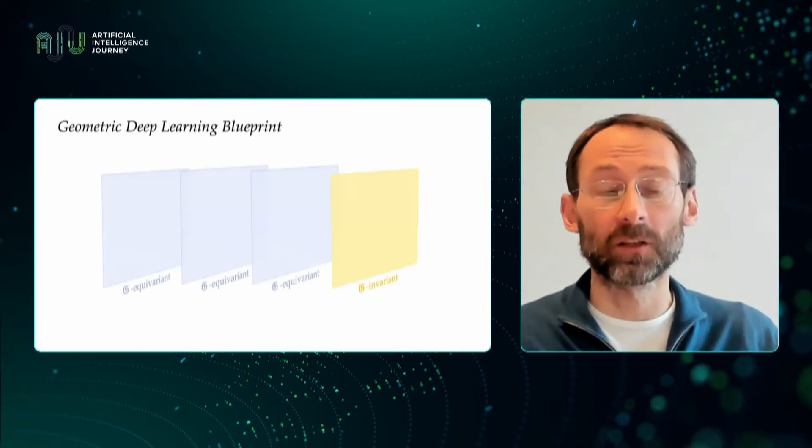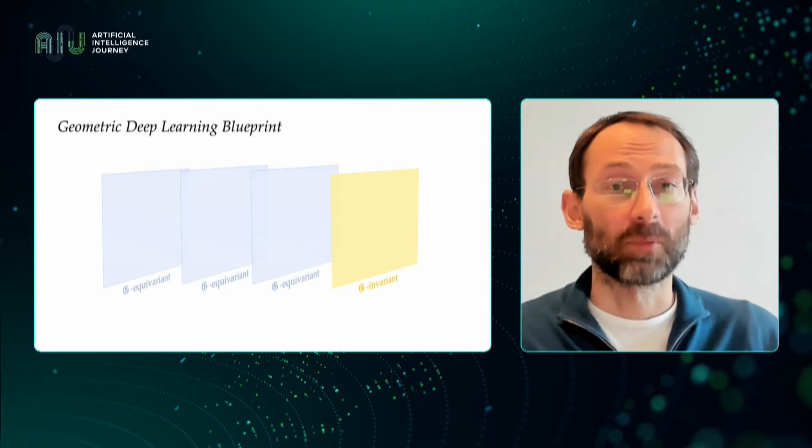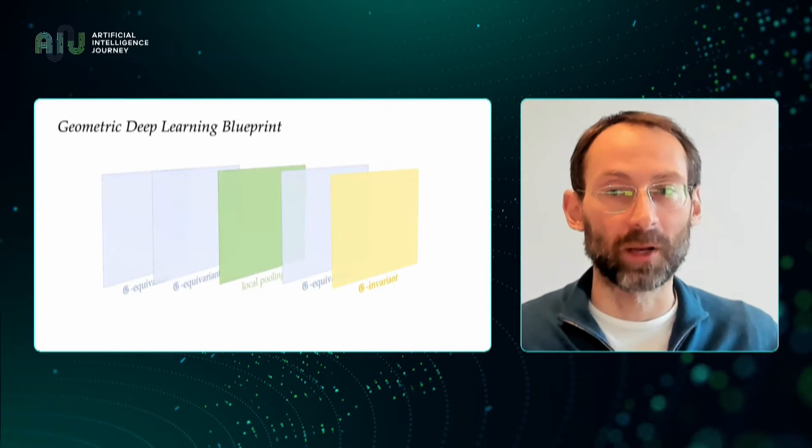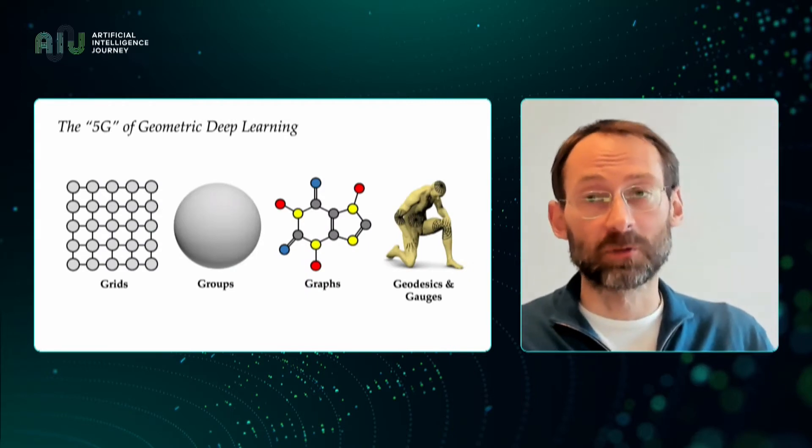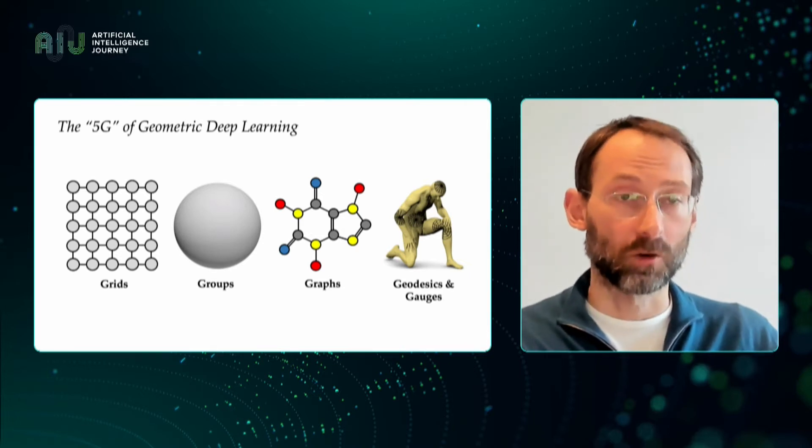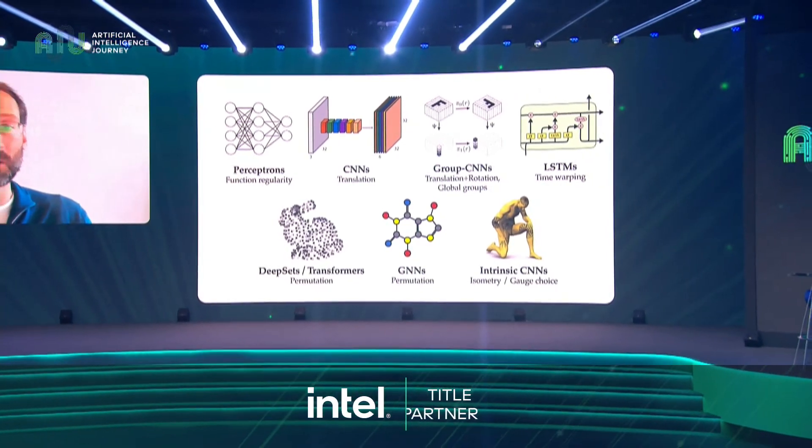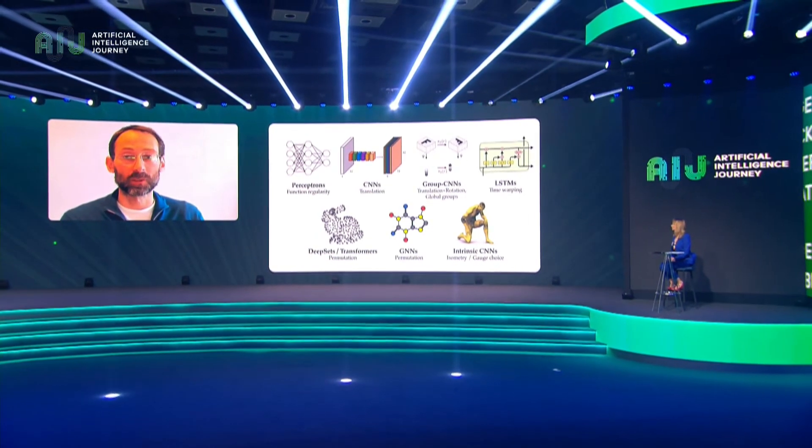These principles give us a very general blueprint that we call geometric deep learning that you can recognize in the majority of popular deep neural architectures used nowadays. We can apply a sequence of equivariant layers, possibly followed by an invariant global pooling layer, and in some cases also using a hierarchy of domains by some coarsening procedure that takes the form of local pooling. This is a very general design. We can apply it to different types of geometric structures, such as grids, homogeneous spaces with global transformation groups, graphs, and manifolds. We call this the 5G of geometric deep learning. The implementation of these principles in the form of inductive biases leads to some of the most popular architectures that exist nowadays in deep learning, whether it's convolutional networks that you can derive from the considerations of translational symmetry, graph neural networks, deep sets, and transformers that stem from permutation invariance, and maybe some slightly more exotic architectures, such as mesh and intrinsic CNNs that can be derived from considerations of gauge symmetry.